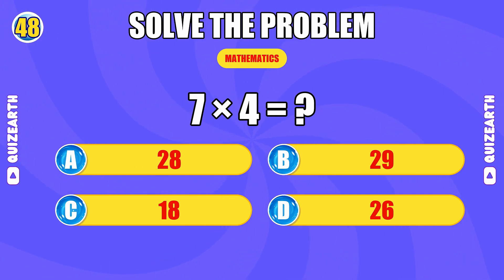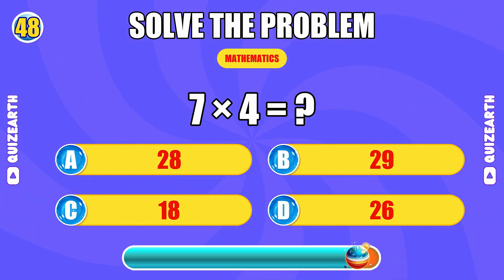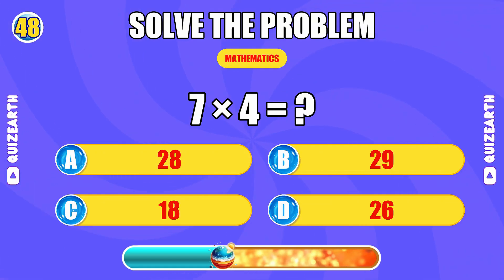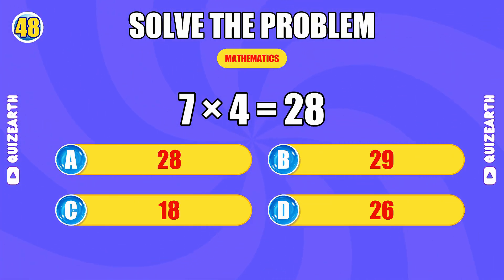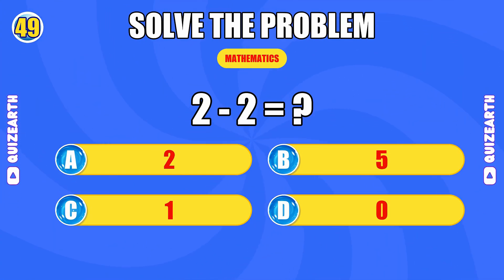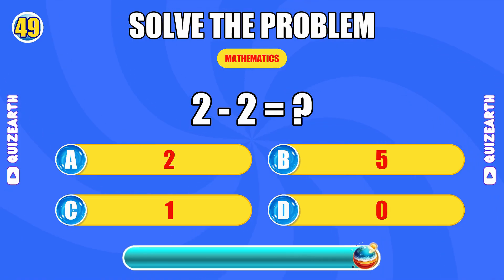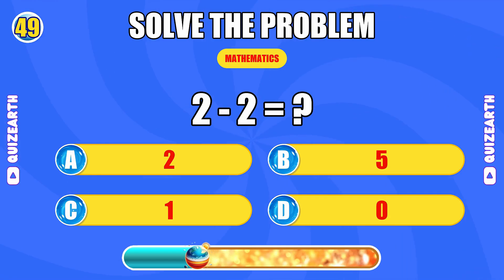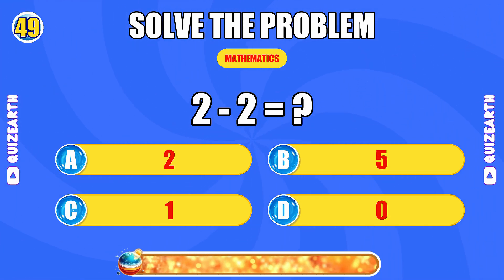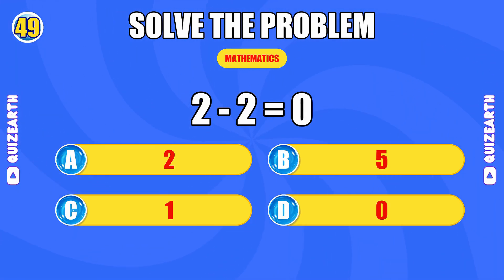What do you get when you multiply seven by four? So close — the answer is 28. What is two minus two? Penultimate perfection — the answer is zero.